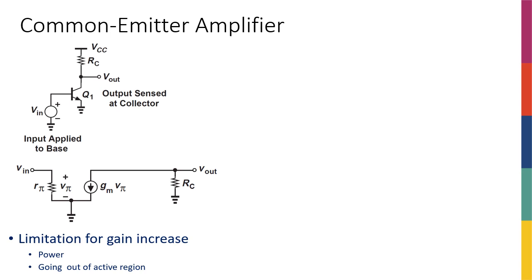Let's analyze our first amplifier — a common emitter amplifier. This is the simplest form of a common emitter amplifier: the input is applied to the base and the output is sensed at the collector.